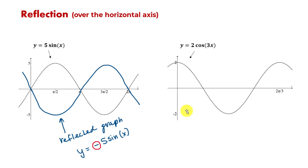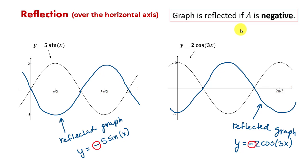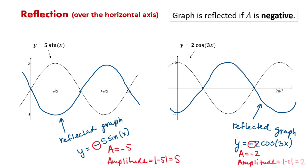For the second graph, the reflected function will be similar but with a negative sign in front of two: y equals negative two cosine of three x. We can say that the graph is reflected if a — the number in front of sine or cosine — is negative. Remember that amplitude is always positive: even though a is negative two, the amplitude is still two, since it's a distance. In the first case, a is negative five, but amplitude is five.